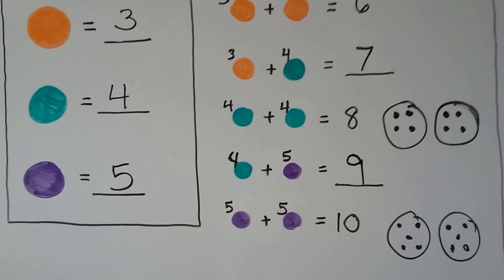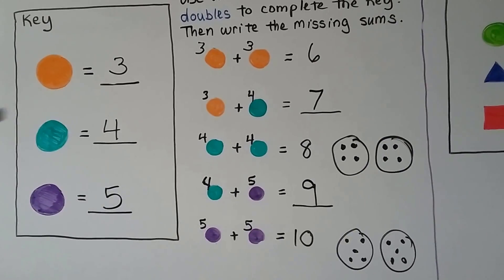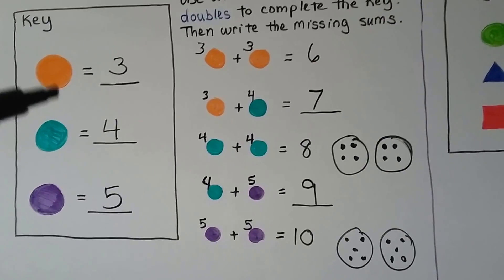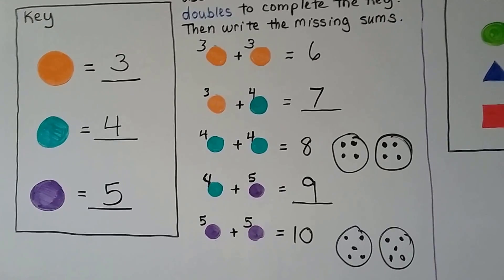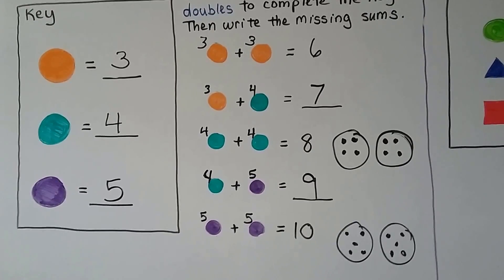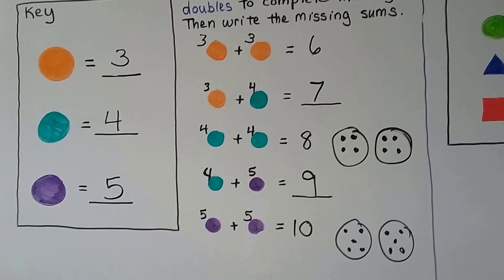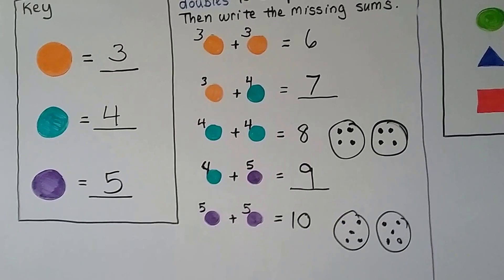So we needed to figure out the doubles facts to find the value of the colored circles in the key, and then we were able to answer the remaining problems.